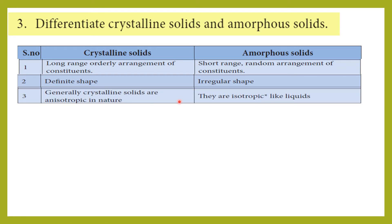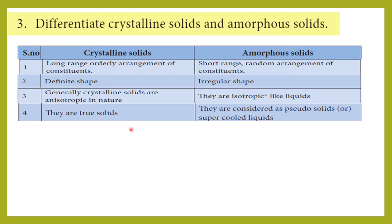Second point: crystalline solids have a definite shape, for example body-centered cubic or face-centered cubic arrangements. Amorphous solids have an irregular shape. Third point: crystalline solids are generally anisotropic in nature — meaning they have different physical properties in different directions.